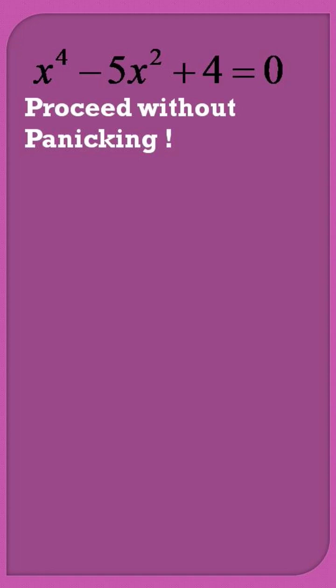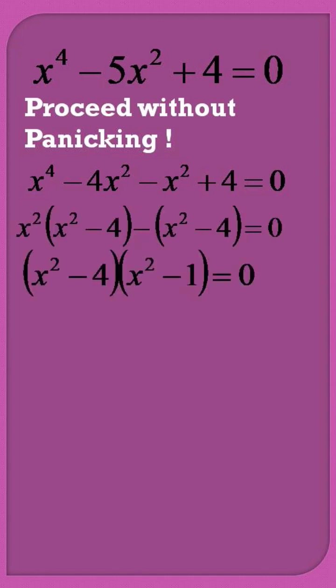To factorize, we express it as x raised to the power 4 minus 4x square minus x square plus 4 is equal to 0, and it results into two factors as x square minus 4 into x square minus 1 is equal to 0.